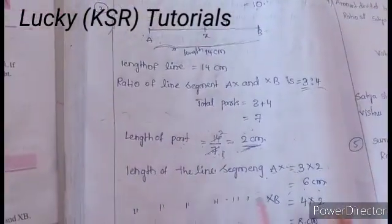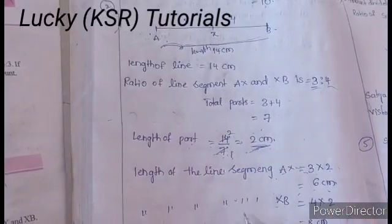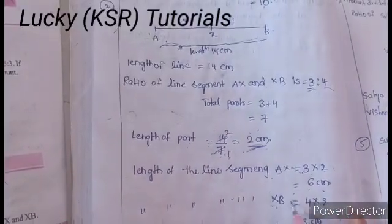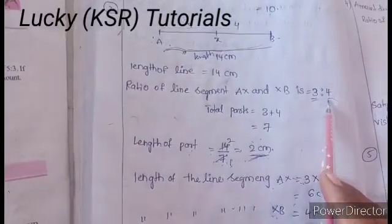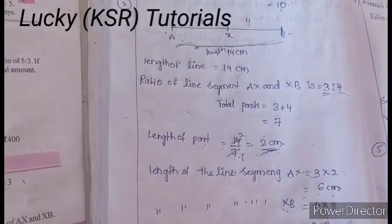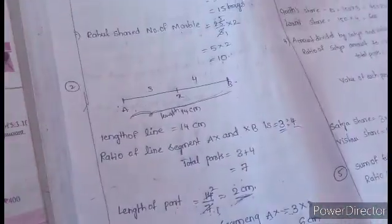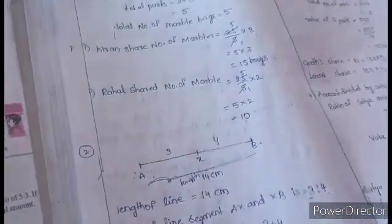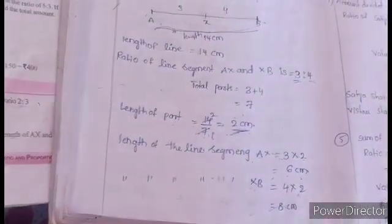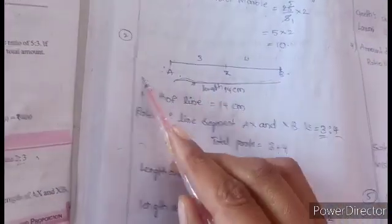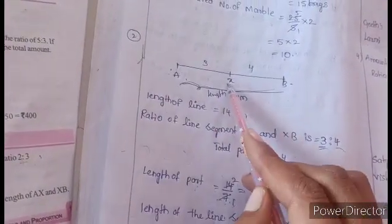For XB: AX plus XB equals 14. So XB is 14 by 7 into 4. That is 2 into 4 equals 8 centimeters. So AX is 6 centimeters and XB is 8 centimeters.